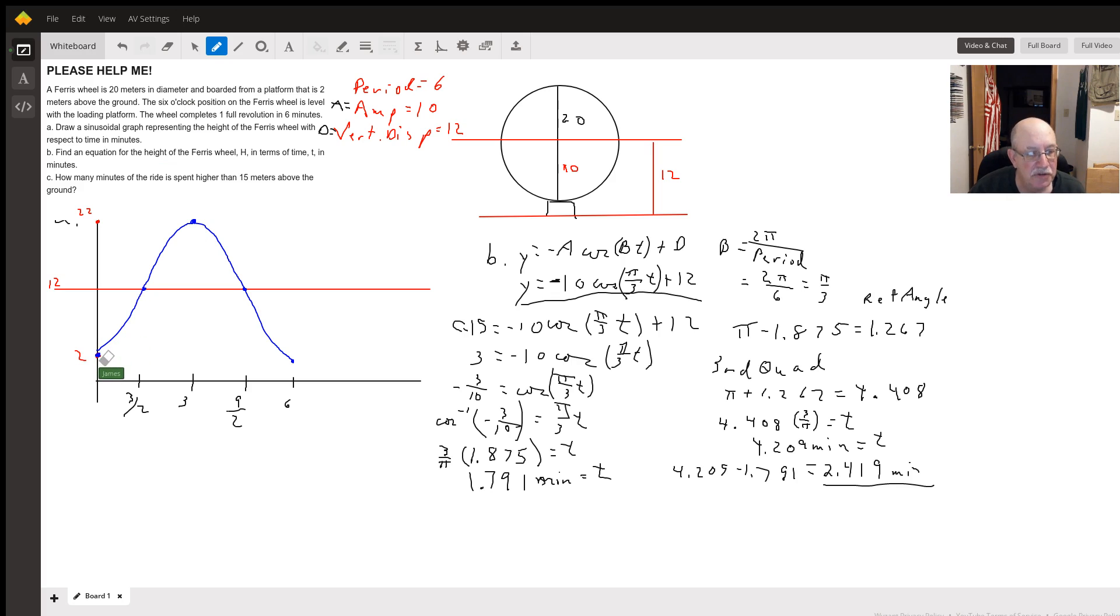So we're starting 2 meters above the ground when time is zero. In a minute and a half we're at the center line of the Ferris wheel. At 3 minutes we're at the top of the Ferris wheel, 22 feet above the ground. In four and a half minutes we are back to the center line, and in six minutes we're back where we started. So that's your graph.